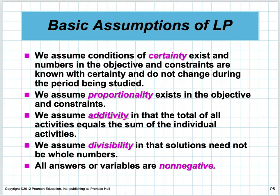Other basic properties: we assume conditions of certainty exist — numbers in the objectives and constraints are known with certainty and do not change during the period we're solving. We assume proportionality: if you double the resources, you can double the amount you make. We assume additivity, divisibility — solutions don't need to be whole numbers — and all variables are non-negative. You can't make a negative product.